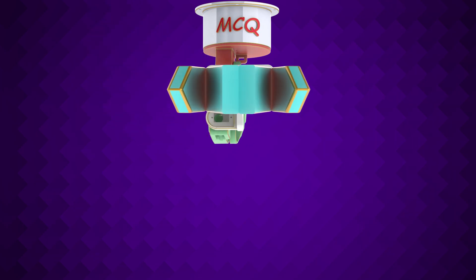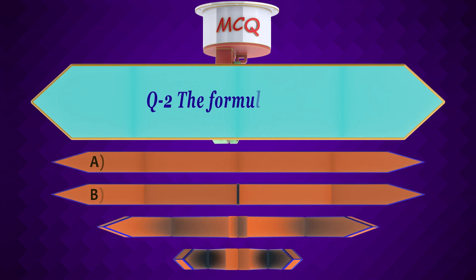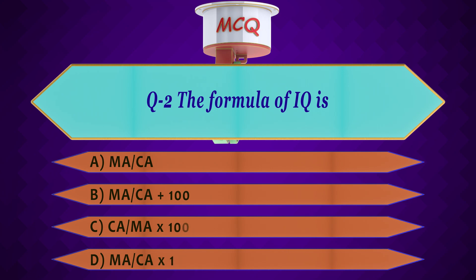Question number 2: The formula of IQ is — A. MA/CA, B. MA/CA + 100, C. CA/MA, D. MA/CA × 100. The answer to question 2 is D, because the formula given by William Stern is IQ = MA/CA × 100.